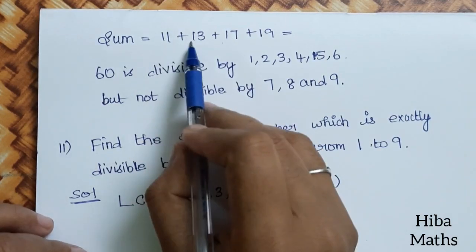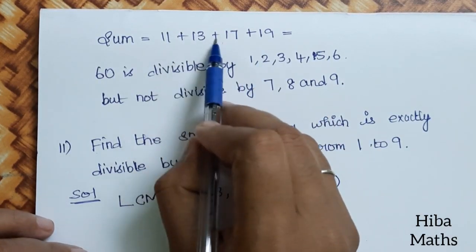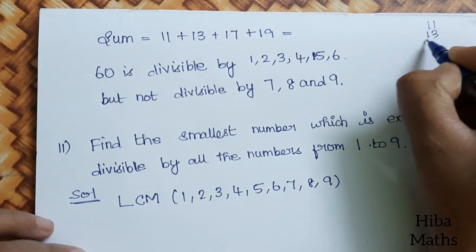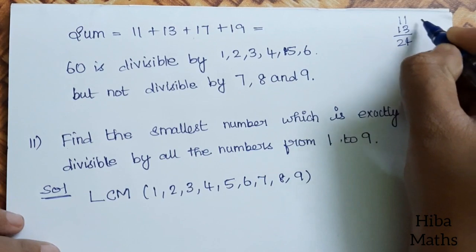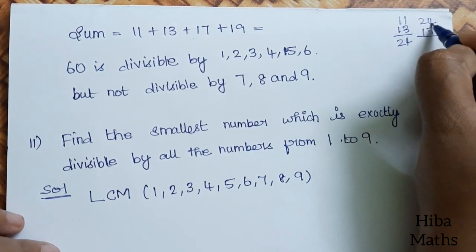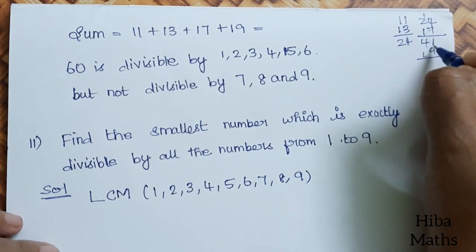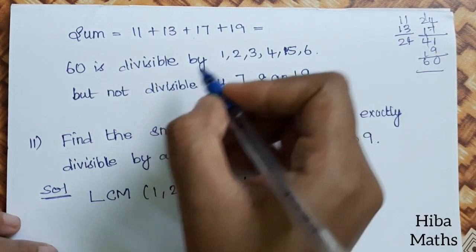Now we are going to sum all the numbers. So we will add: 11 plus 13 plus 17 plus 19. The sum is 60. Correct?